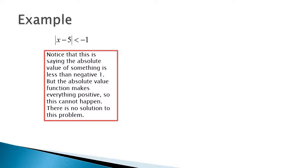This is saying that the absolute value of x minus 5 is less than negative 1, but an absolute value — whatever comes out of it — is always positive. It can never be less than negative 1, so there's actually no solution to this problem. They will throw these at you from time to time, so be alert.